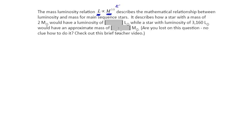But this 3½ is the key thing, and we'll see how that impacts the effect here on luminosity. So this question asks, it describes how a star with a mass of two solar masses, two times the mass of the sun, would have a luminosity of...